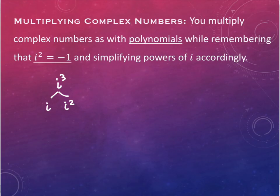So let's say you did have an i cubed involved. Powers of exponents tell you that you could separate this into i and i squared. The i squared is negative one, and the i is i. So this ends up giving you negative i.